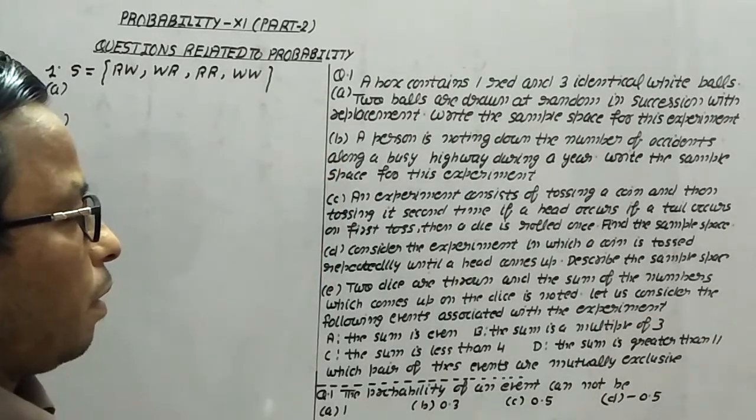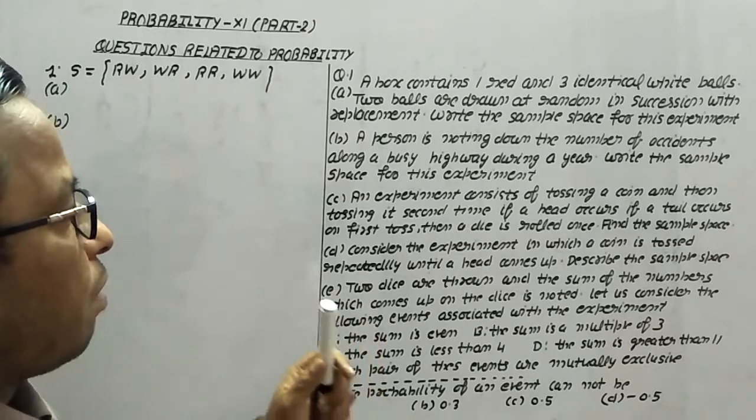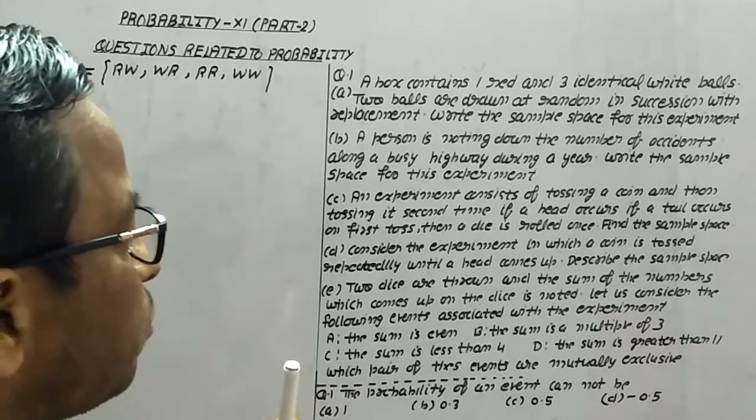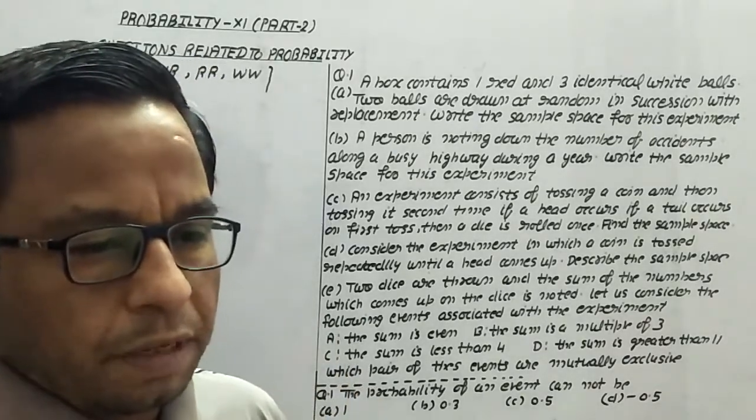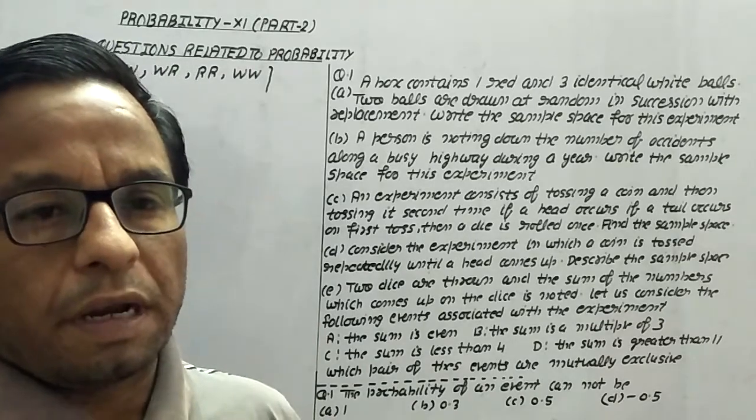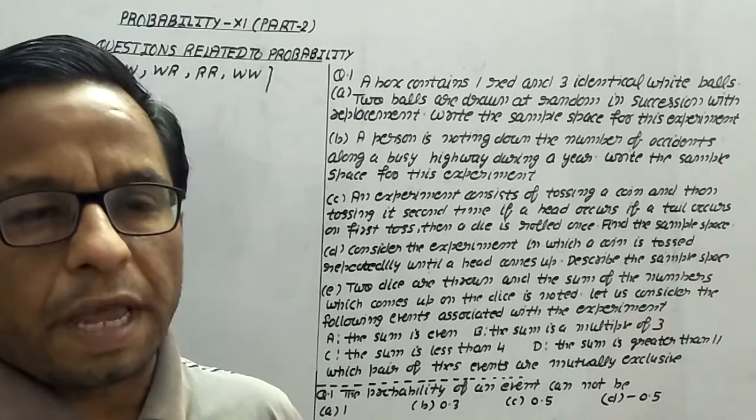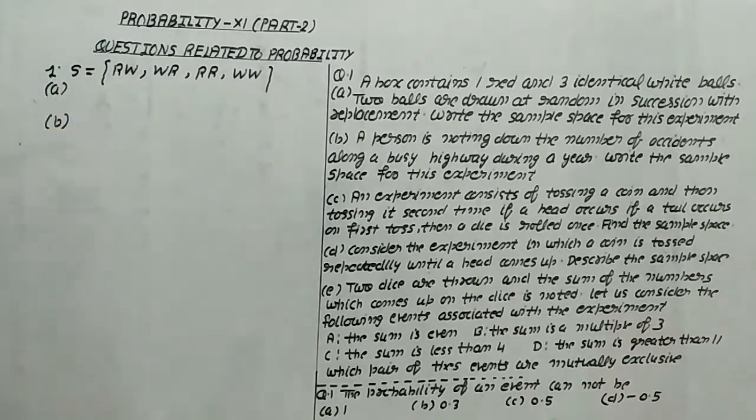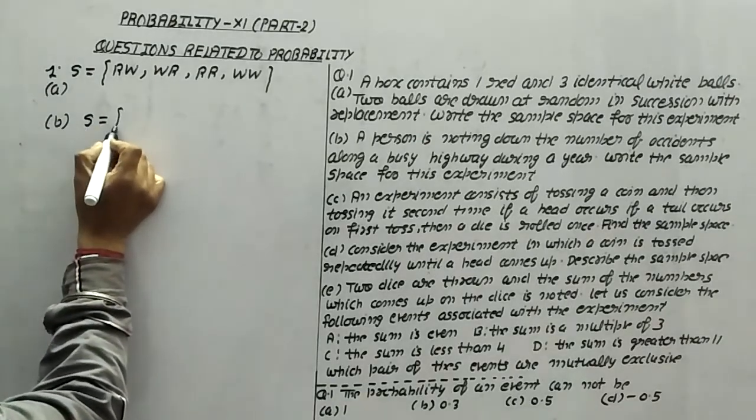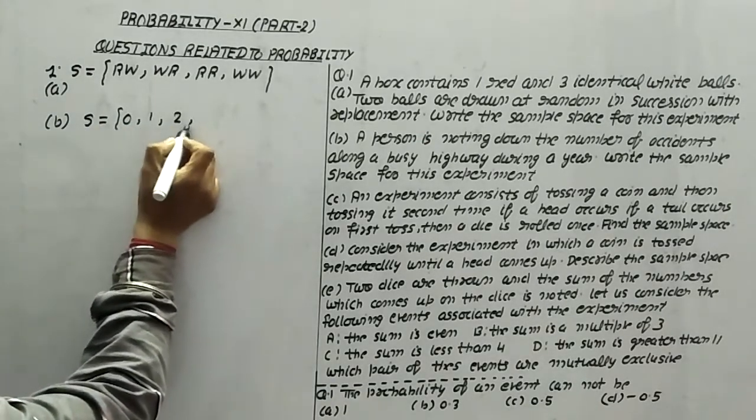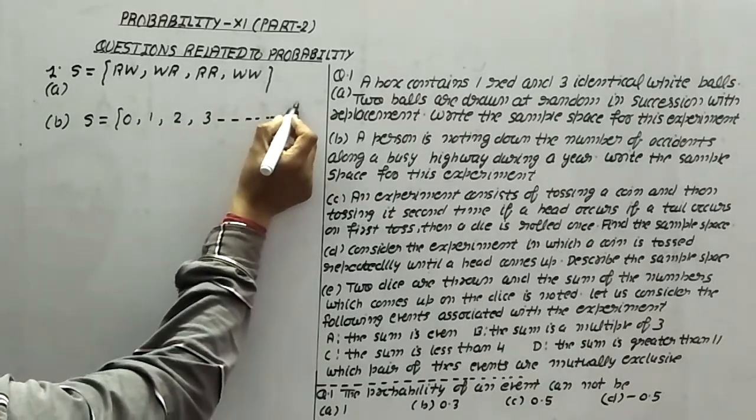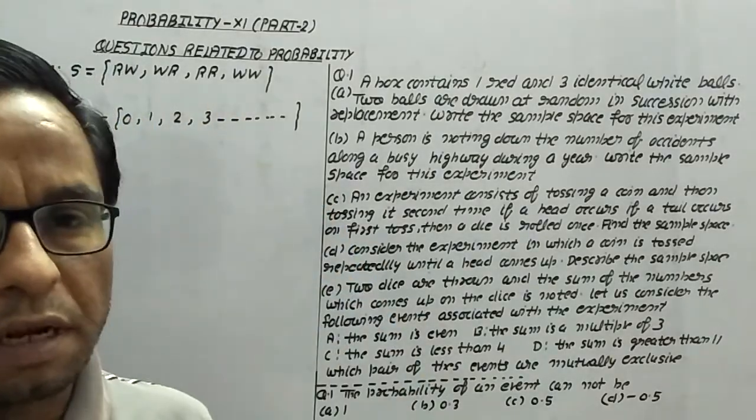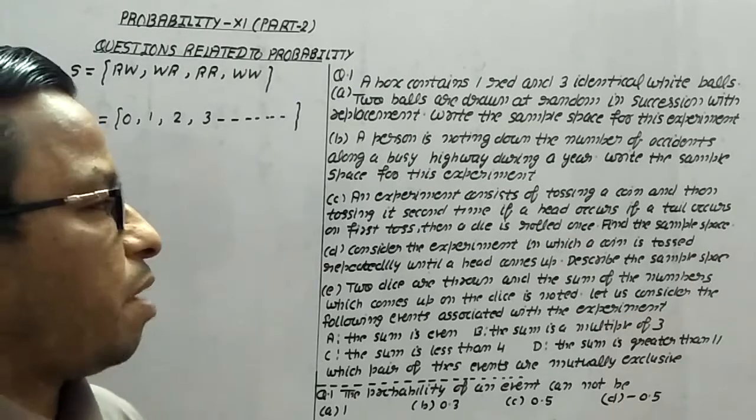Now, question number 1B. A person is noting down the number of accidents along a busy highway during a year. Write the sample space for this experiment. If first day the number of accidents is 0, second day it may be 1, third day it may be 2, and so on. The sample space will be {0, 1, 2, 3, ...}, meaning the number of accidents during the day may vary.